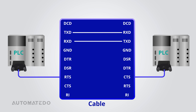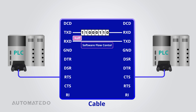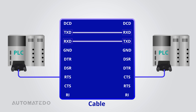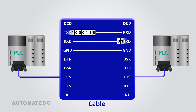Software flow control involves sending specific packets — XON and XOFF — to regulate data flow. When the receiver is prepared to accept additional data, it sends an XON packet to the transmitter indicating readiness. Conversely, when the receiver needs to pause the data flow, it sends an XOFF packet, signaling the transmitter to stop sending data until further notice. In a basic RS-232 setup, the TxD and RxD pins must be connected between two devices, along with a ground wire. These three links facilitate successful communication between RS-232 devices.